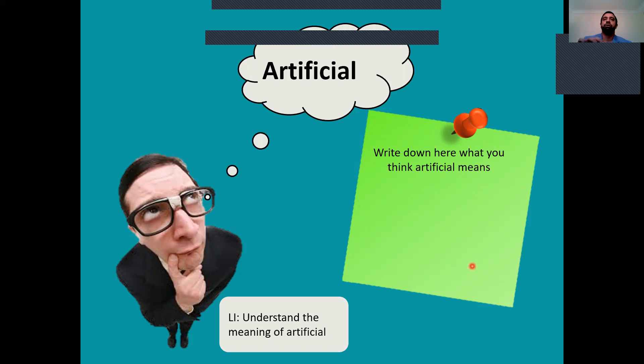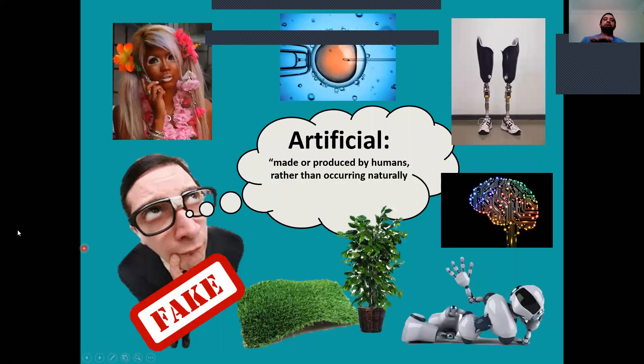Okay, so now you should have written something, and we're going to check what artificial means. Artificial is something made or produced by humans rather than occurring naturally. So things like trees, grass, animals—they're not artificial, they occur naturally. But things like fake grass, plastic plants, or robots are man-made. The way that links in with origami is because the products you make, they're not real, they're artificial, they're man-made.